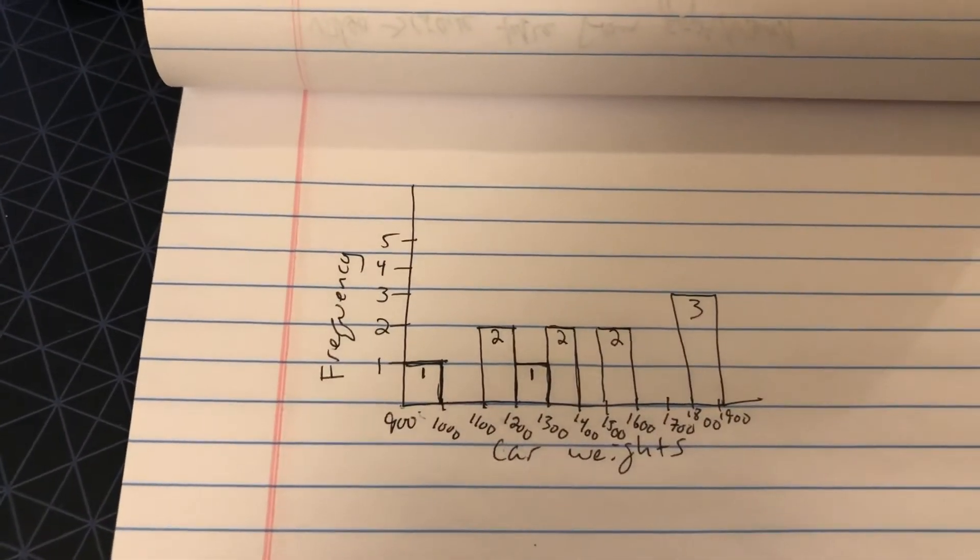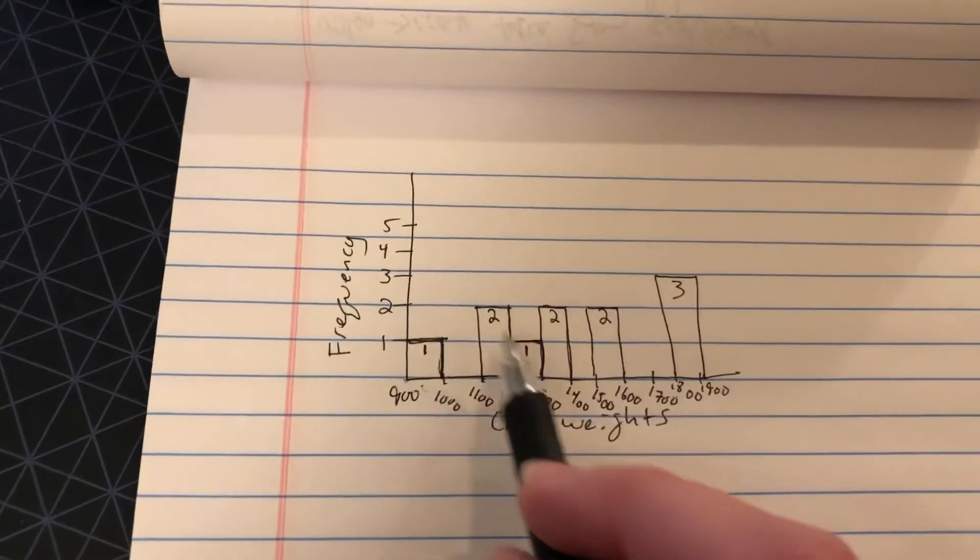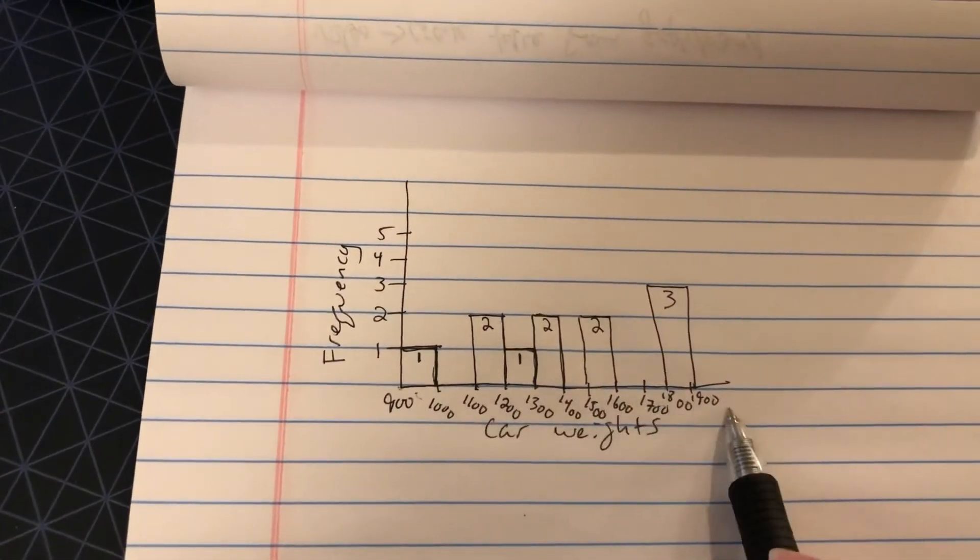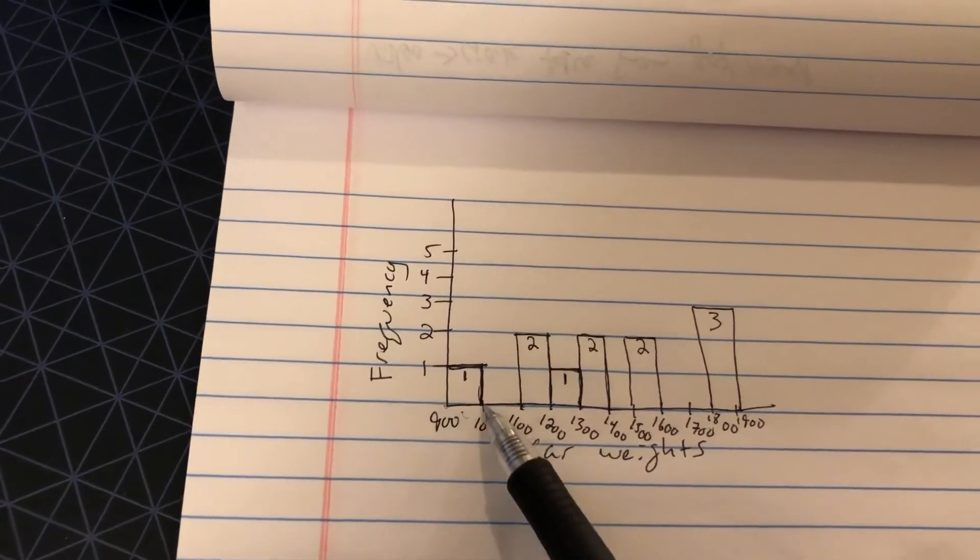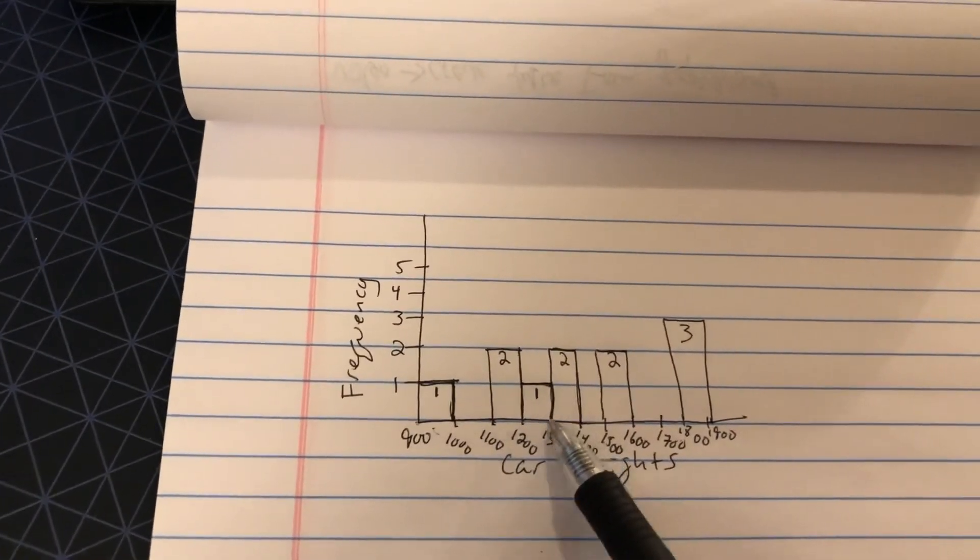And there we go. There's a histogram. I can see how many cars are in between those different weights. This is just counting literally how many cars. And then we're in between all of those little weights.